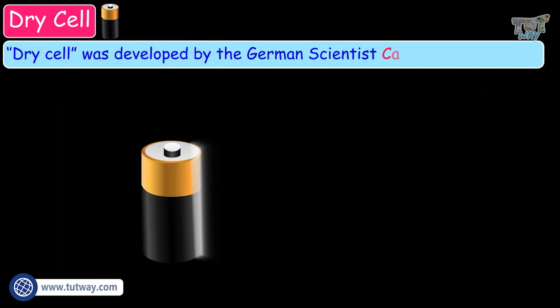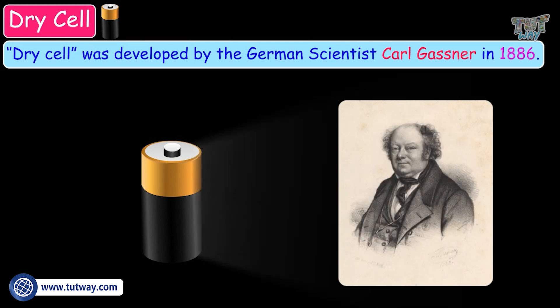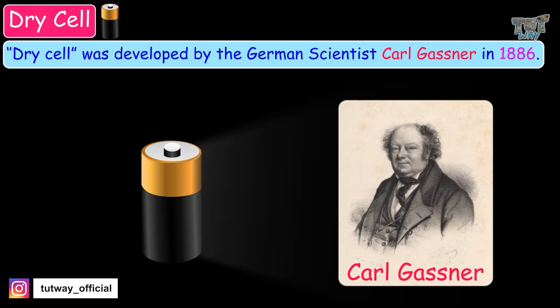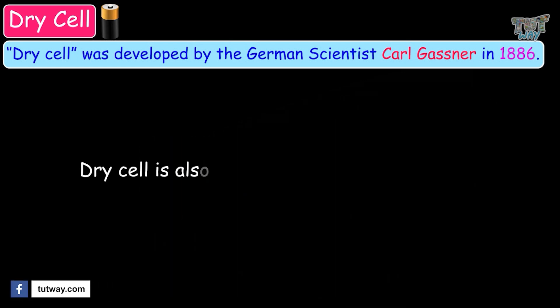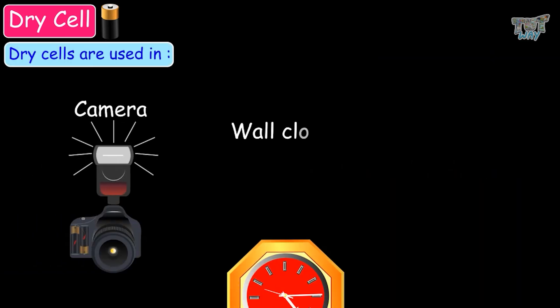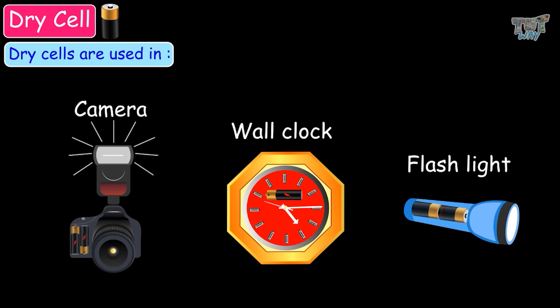The dry cell was developed by the German scientist Karl Gassner in 1886. The dry cell is also known as the dry-leclanche cell. Dry cells are used in cameras, wall clocks, flashlights, and so much more.